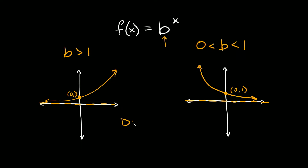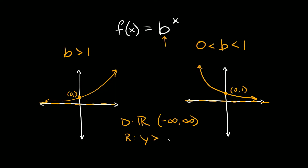The domain and range are the same for both graphs. The domain is all real numbers, which we can write as negative infinity to positive infinity in interval notation. The range for both is y is greater than 0.